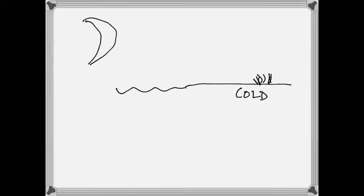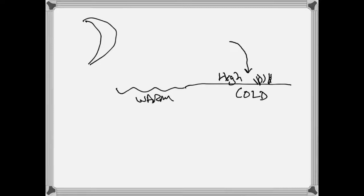So land during the night gets pretty cold, and air in contact with the land gets cold too — it becomes dense, heavy, and sinks, creating a high pressure system over land. Water, on the other hand, is relatively warm compared to the cold land, because its temperature hasn't changed dramatically from day to night. The air above the warm water is relatively warm, it expands, lifts into the sky, and creates a low pressure system over the sea. Air flows from high to low — that's our land breeze.